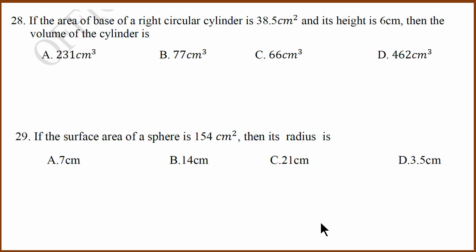28th question is again simple formula substitution. They have given you base area of right circular cylinder, and you multiply that with height. You multiply the base area with height. In this case if you do that, you get 231 cm cube. A is the answer.